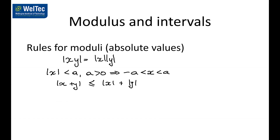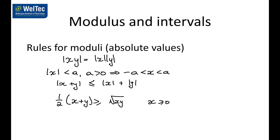A tricky one you might need to know: one half of (x plus y) is greater than or equal to the square root of xy, providing x is positive and y is positive.